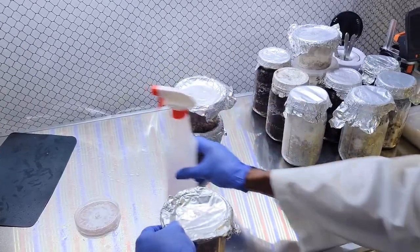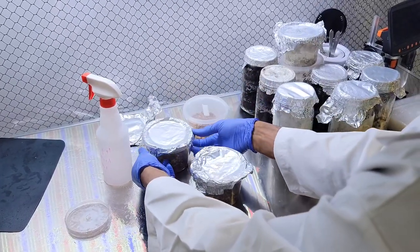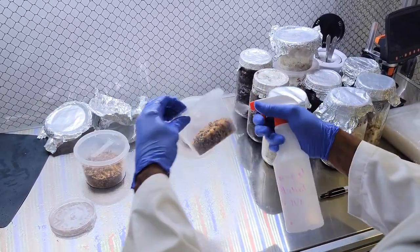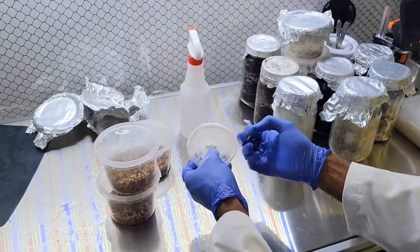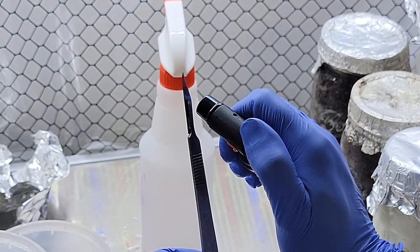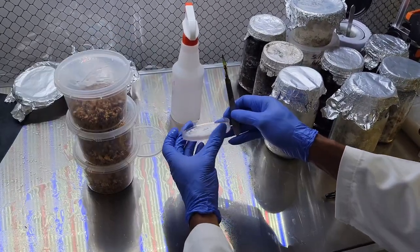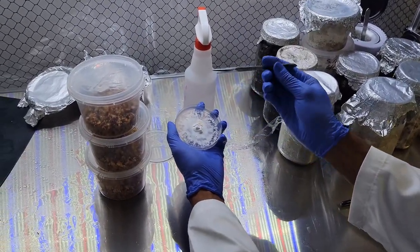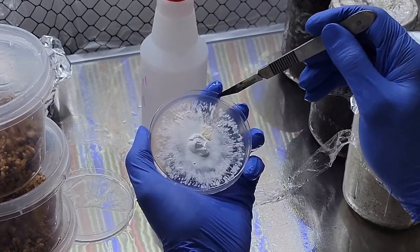We're uncovering our sterilized grain, making sure everything is sterile before we open it. Now we're gonna sterilize our knife by heating it with the flame torch. Always be careful when you're using isopropyl alcohol and a Bunsen burner or torch at the same time. You can very easily set your hands or your equipment on fire.